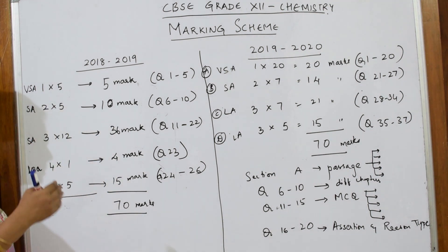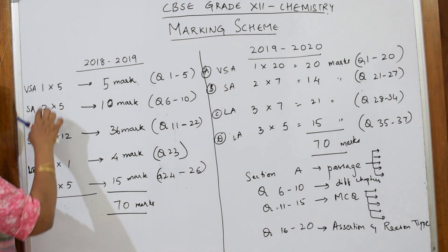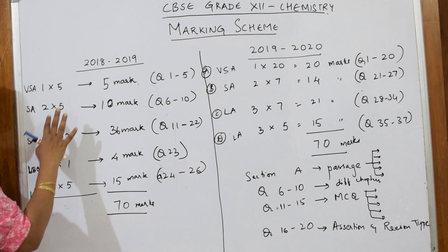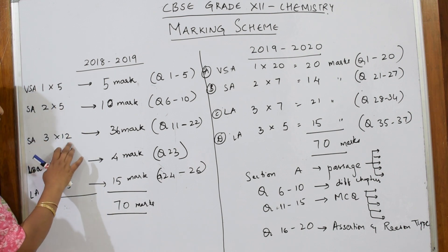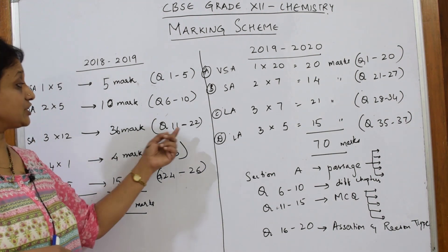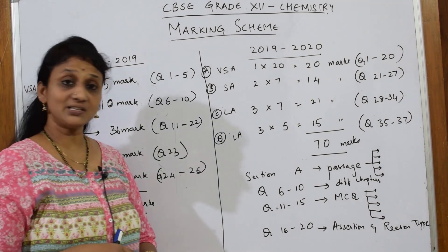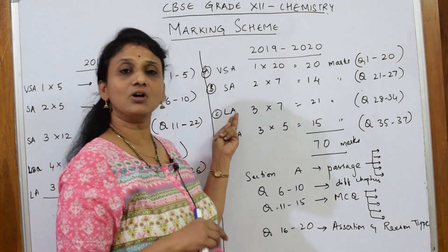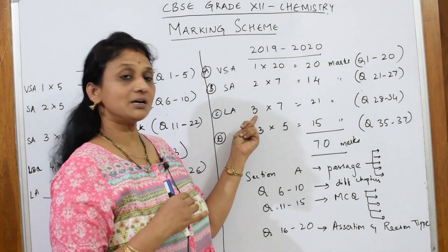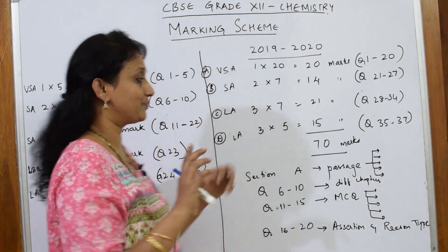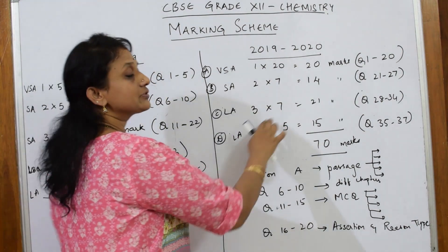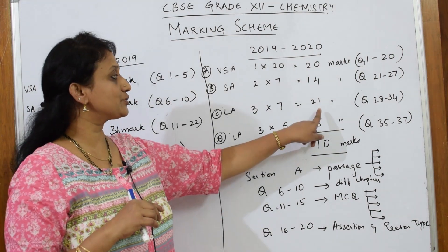In the previous year, there were three-mark questions — 12 questions worth 36 marks, from question numbers 11 to 22. This year, the three-mark questions are reduced to seven questions, coming to 21 marks. The number of three-mark questions has been significantly reduced.